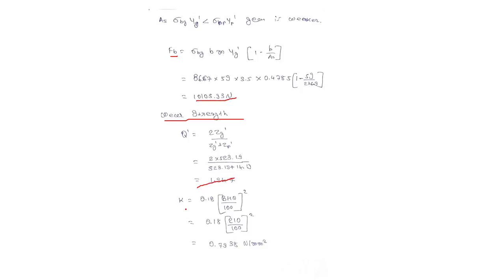Now for pinion and gear, k is 0.18 BHN upon 100. The value of BHN is given as 210 for both pinion and gear, so we get k is equal to 0.7938.